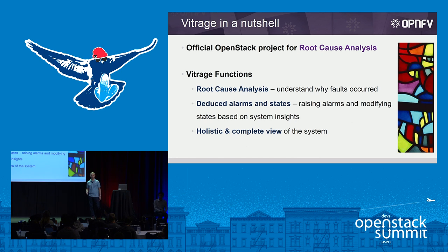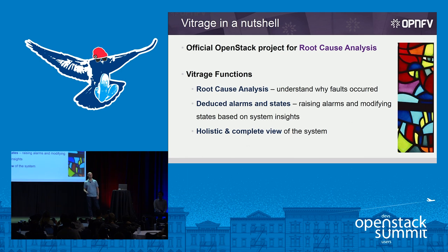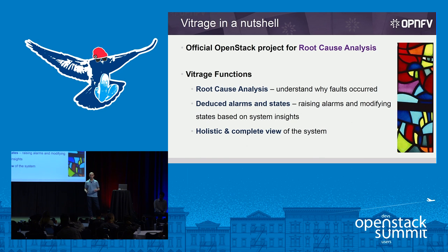The three main functions of Vitrage are: first, to provide root cause analysis — to understand why faults occurred and what is the reasoning for failures. The second is to raise deduced alarms and states. A deduced alarm is an alarm that is not directly observed, but deduced from system insight — same for deduced states. And last, because of the way we store information across multiple data sources, we provide a holistic and complete view, aggregating the relationships between the hardware, virtual, and application layers.